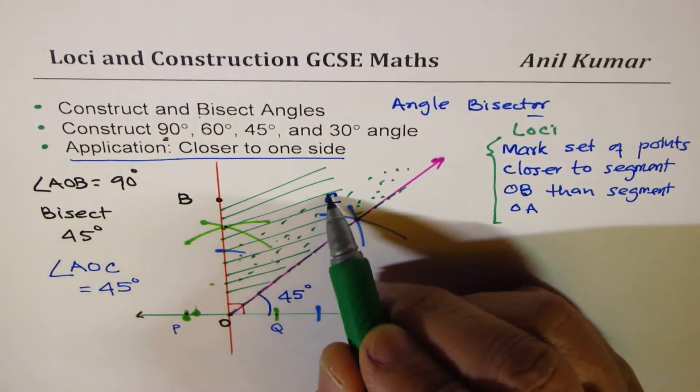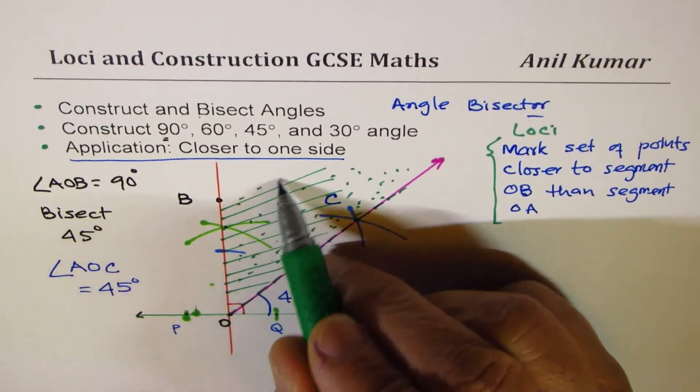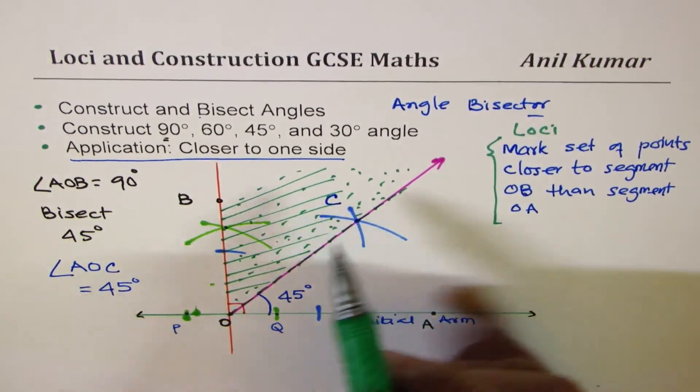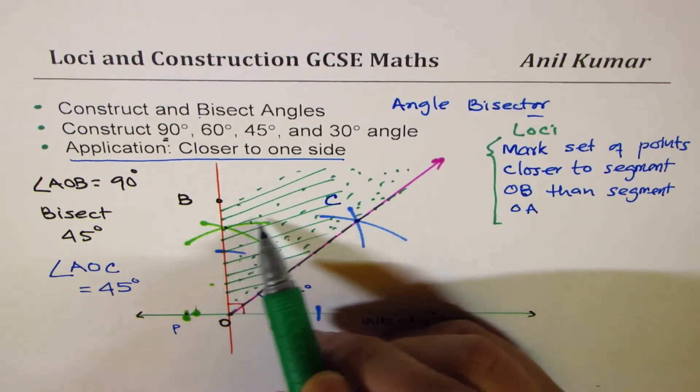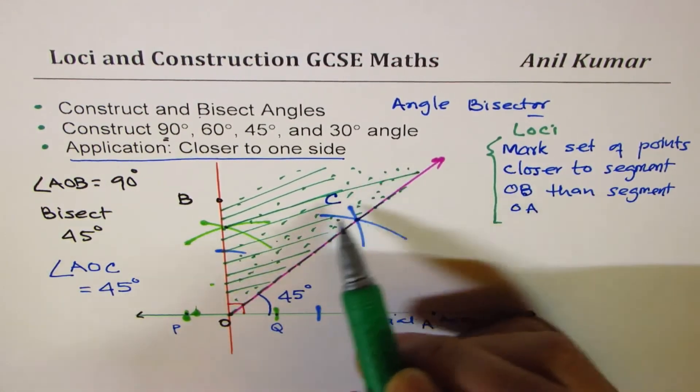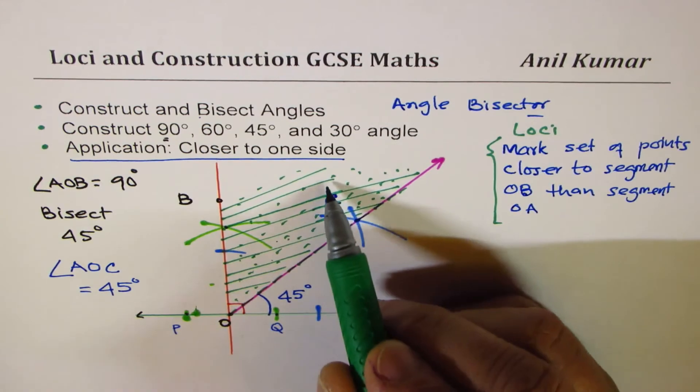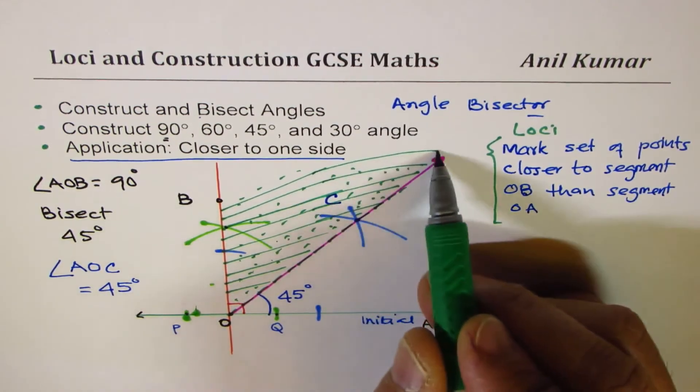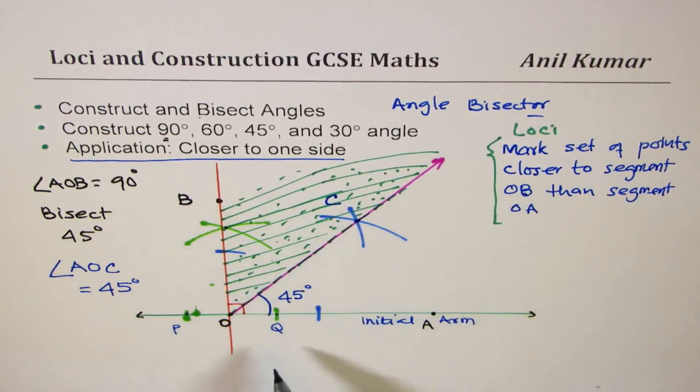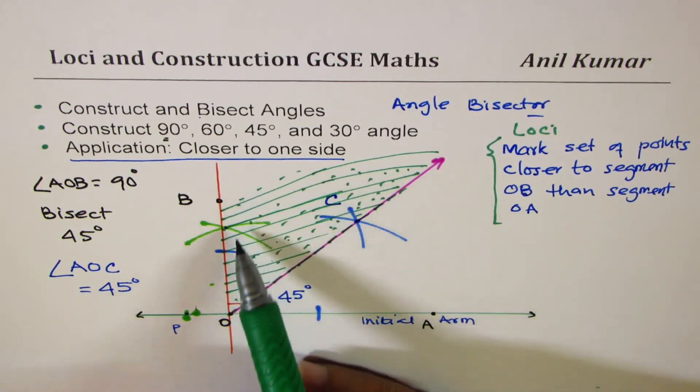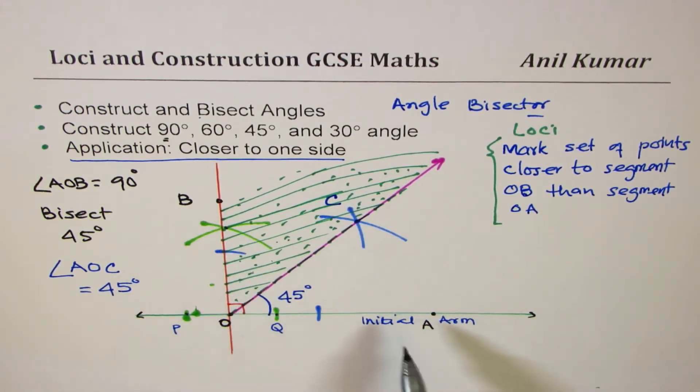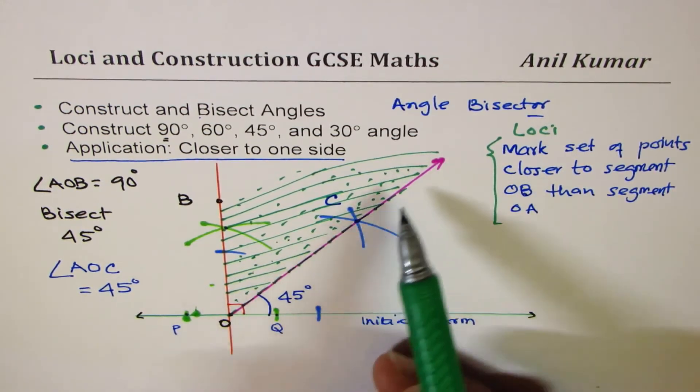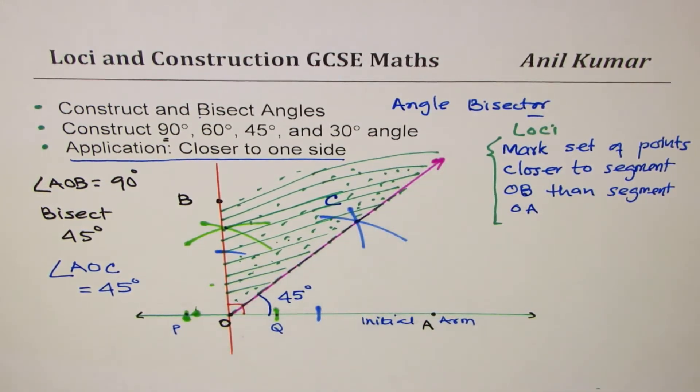Like this, you could do like this, shaded. If you're drawing these lines, they have to be extended up to this point. I'm trying to mess it up now. Anyway, you get an idea. So all this region is closer to the segment OB than OA. Do not include the line because that is equidistant from both. So we're done half the work.